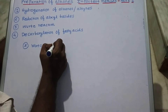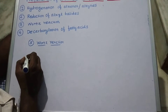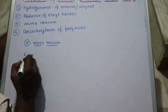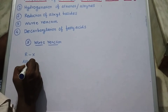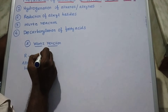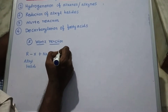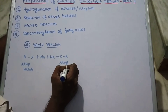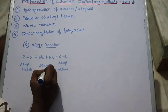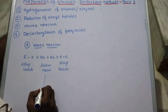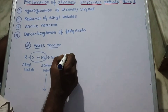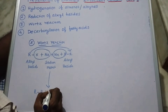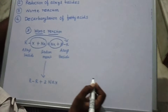In the Wurtz reaction, an ethereal solution of alkyl halide RX reacts with sodium. Similarly, another alkyl halide XR also reacts with sodium metal. These are taken in ether solution. The sodium atoms eliminate NaX, and the two R groups combine with each other to form R-R plus two molecules of NaX, which is the corresponding sodium halide.